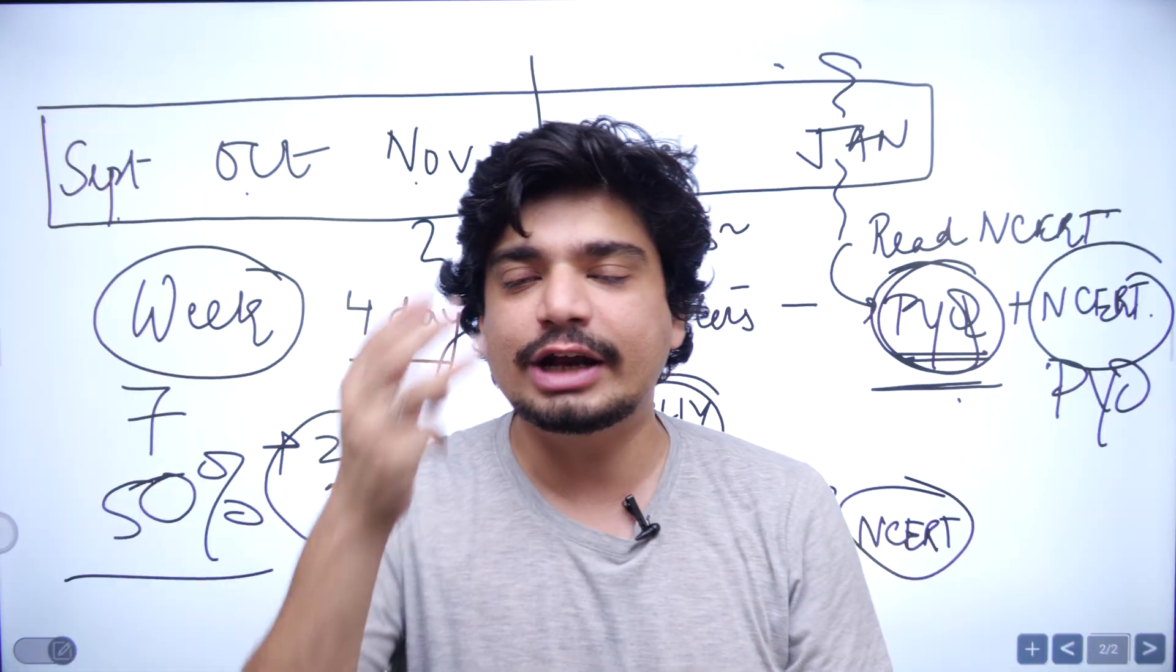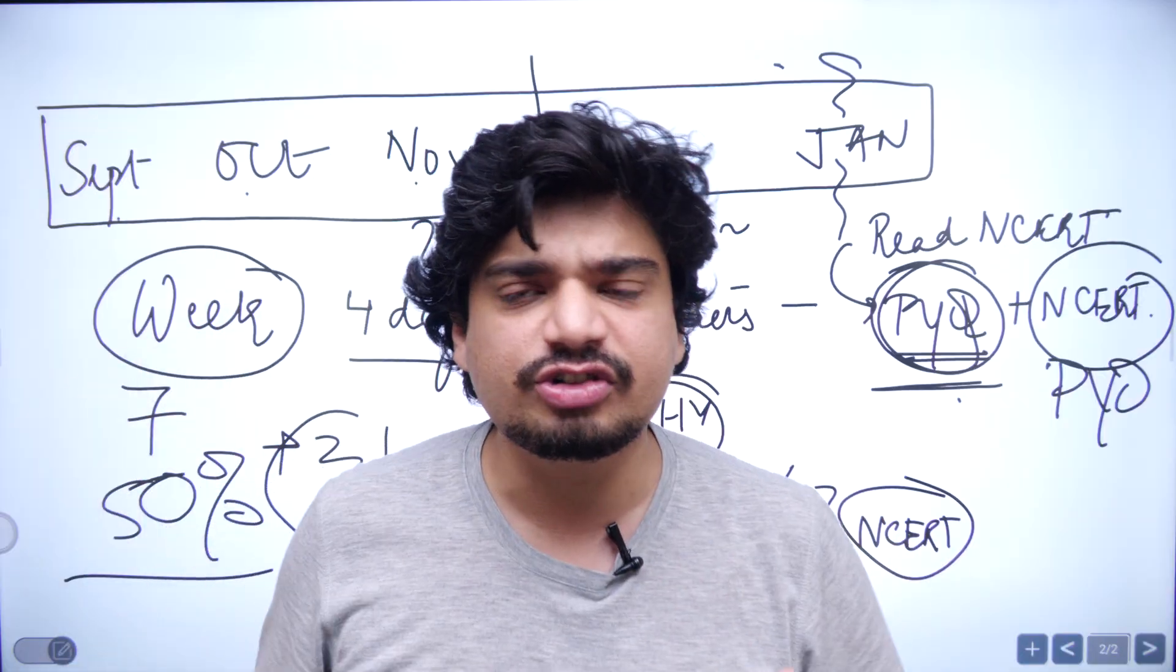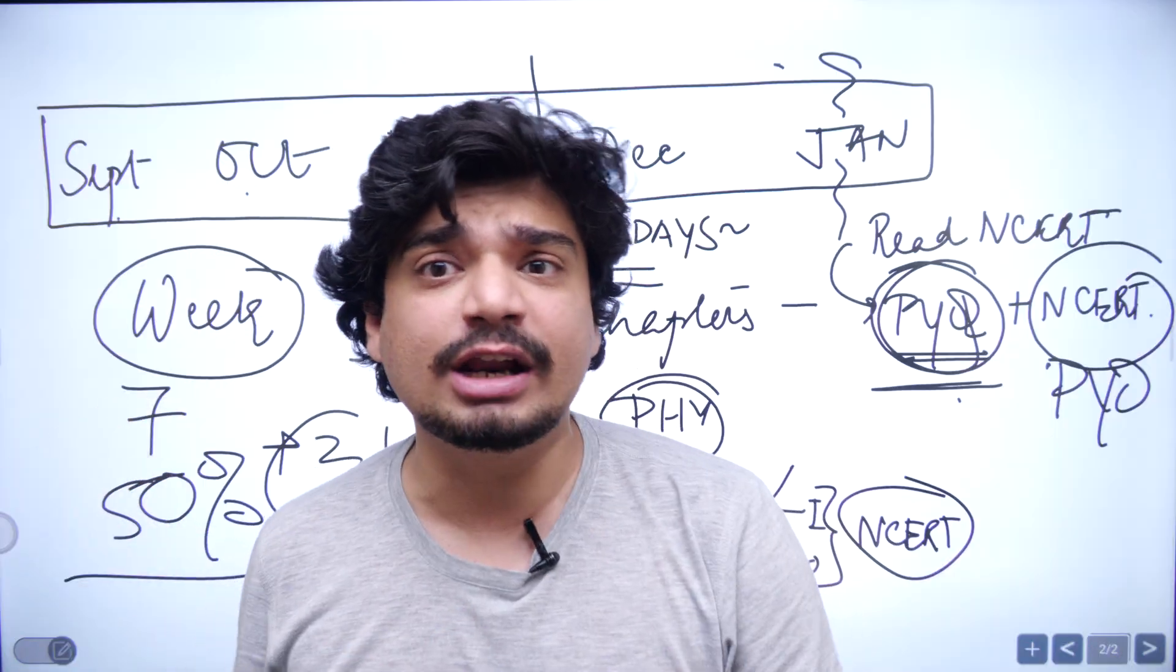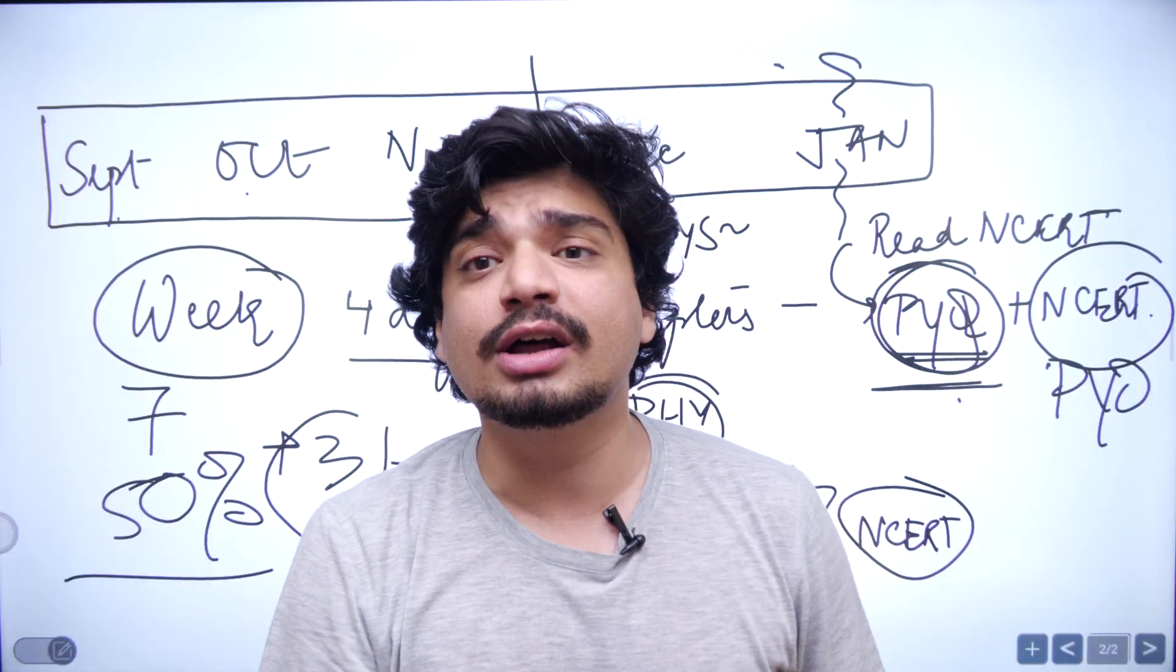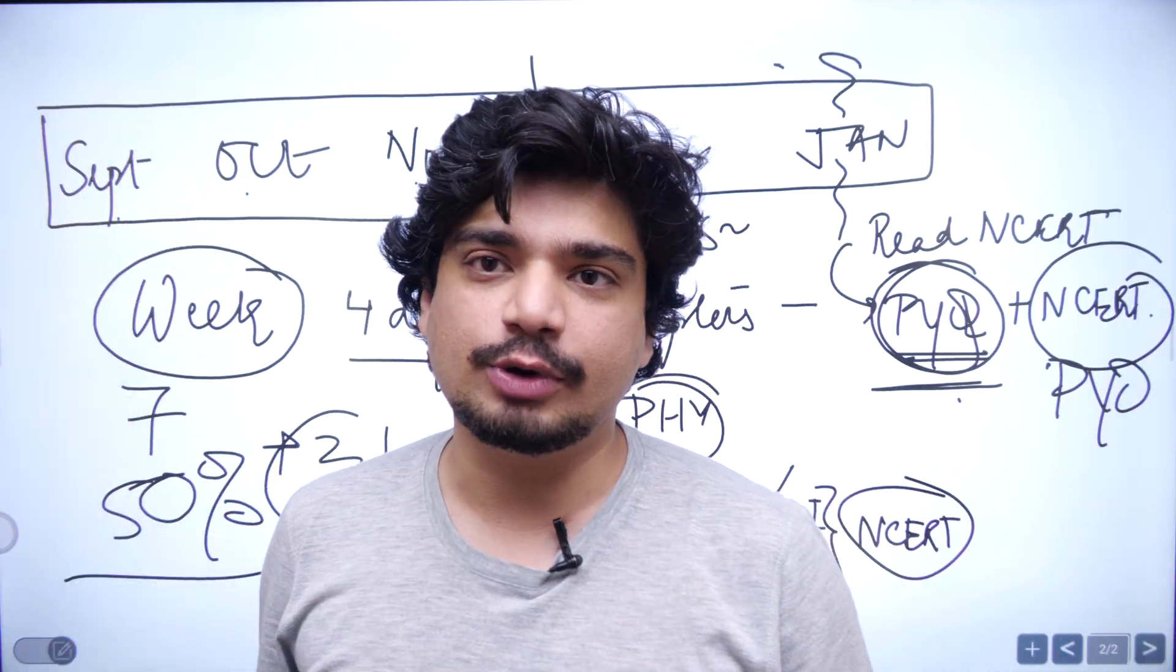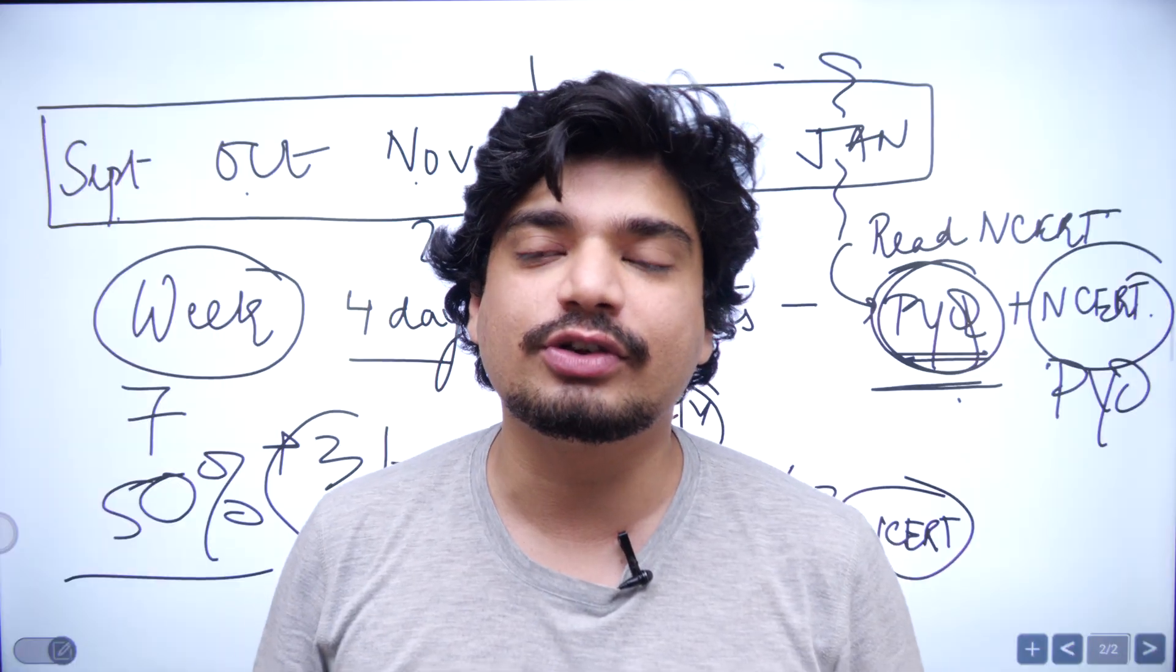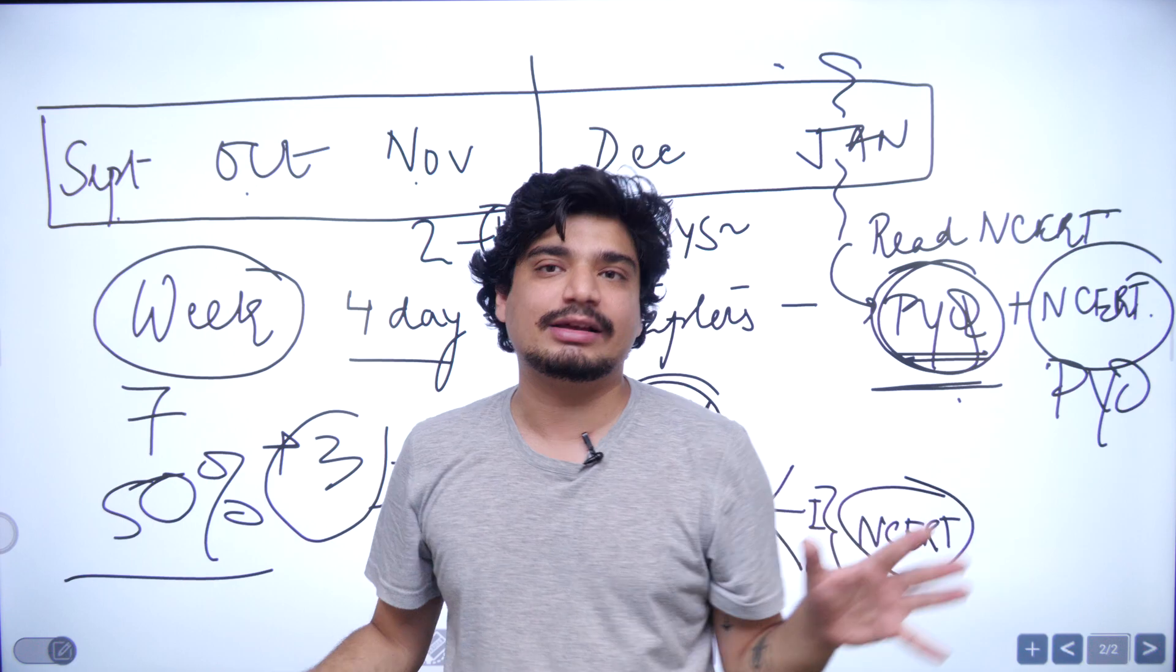Then comes the process of revision and you need to do two or three revisions. Another revision by March-ish, another revision by mid-April-ish and one final seven to ten day revision when you're brushing up all the formulas. You're reading your NCERT once again and you're practicing MCQs at the same point of time. You're brushing up on your previous year questions. This is the way a dropper can crack any goddamn exam in the world.